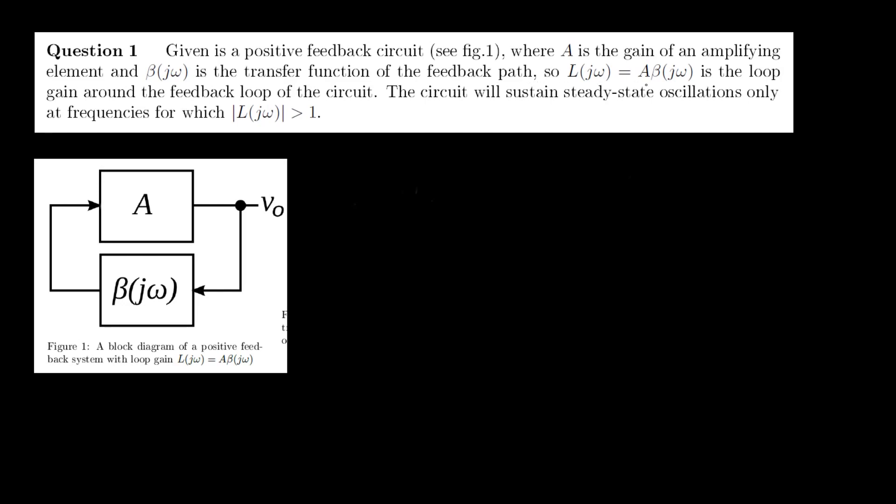So L is defined as the multiplication of A and beta, is the loop gain around the feedback loop of the circuit. The circuit will sustain steady state oscillations only at frequencies for which the modulus of L is larger than one, and it's asked of us to assess whether this is true or false.